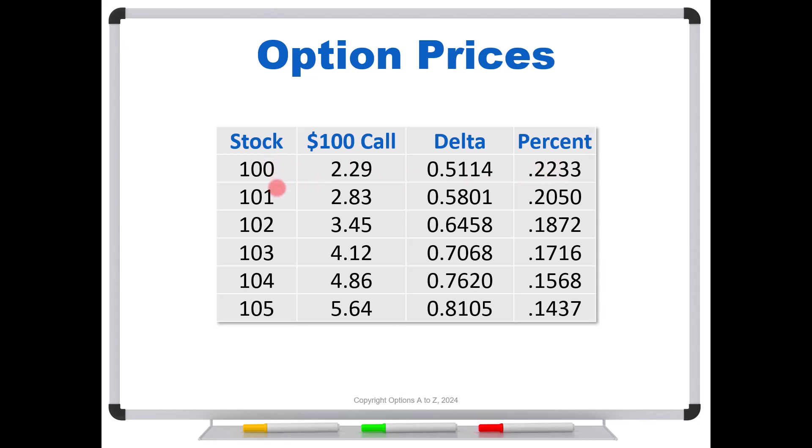However, if the stock goes to 101, the call's price changes, but so does the delta. So now if we take roughly 58 divided by 283, we drop to about 20.5%. If the stock rises to 102, we're going to take a delta of about 64.5 divided by 345, and our percent drops again to about just under 19%.